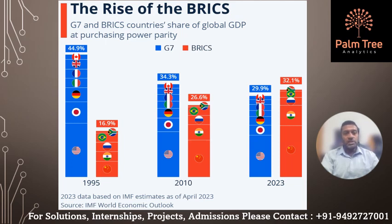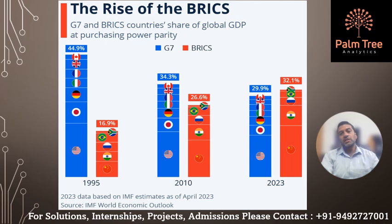For a long time, the G7 — consisting of the United States, Canada, United Kingdom, Germany, France, Italy and Japan — has held sway over global economic governance and decision making. However, as the BRICS nations experienced rapid economic growth and development, their collective influence and ambitions began to grow. China's spectacular economic ascent has reshaped global trade, investment and supply chains.